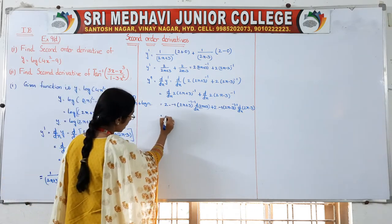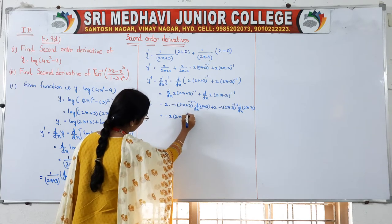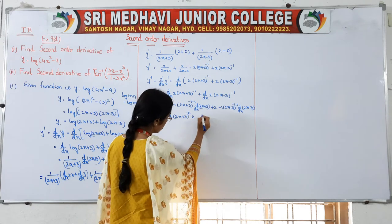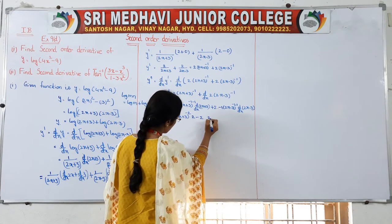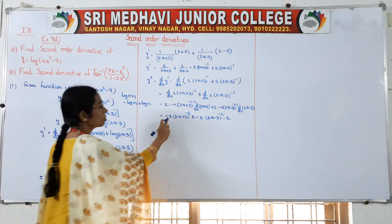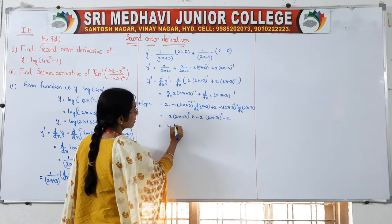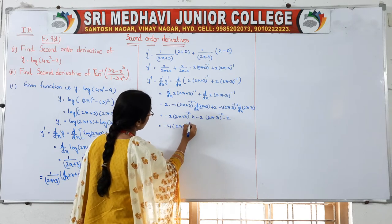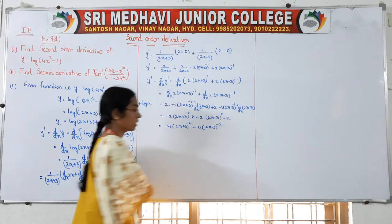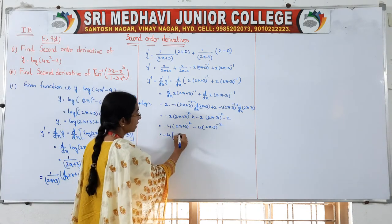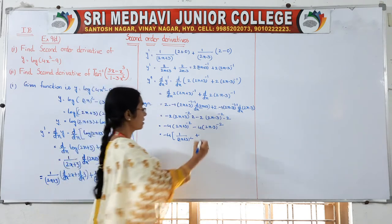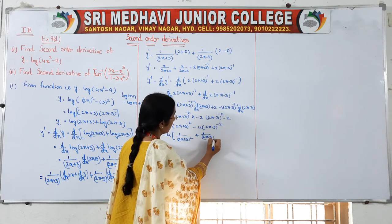So this equals: -2·(2x+3)⁻²·2 + (-2)·(2x-3)⁻²·2 = -4(2x+3)⁻² - 4(2x-3)⁻². Taking -4 outside: -4[1/(2x+3)² + 1/(2x-3)²].